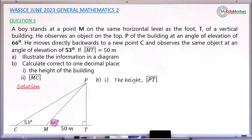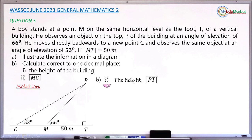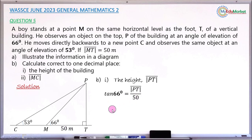Looking at this right-angle triangle, I have the angle of 66 degrees. This angle is opposite to the side PT that we want to find. The side of 50 meters is adjacent to this angle of 66 degrees. So I'll take the ratio that involves the opposite and adjacent sides, which is the tangent ratio. Tangent of 66 degrees equals PT divided by 50.